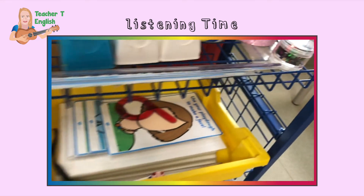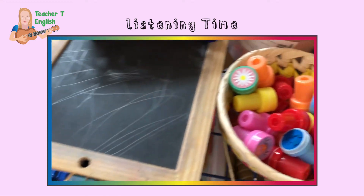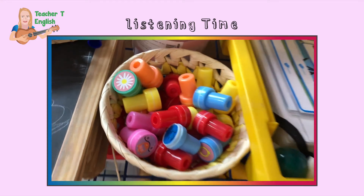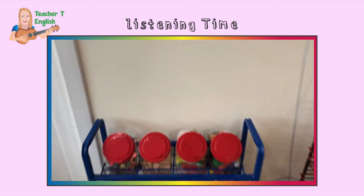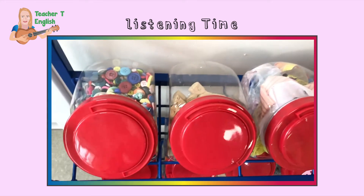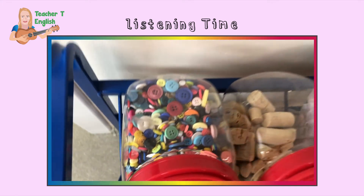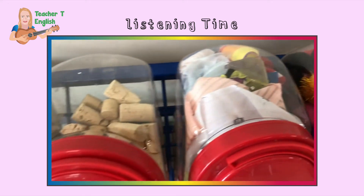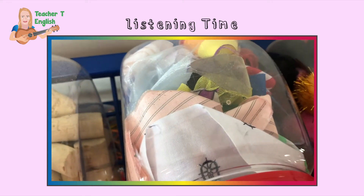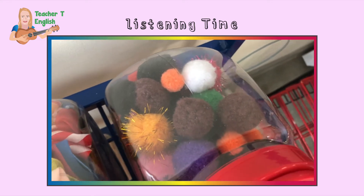Oh, look at these things! Chalkboard — stampers! So many special things in primary one. Let's go see over here — I love these boxes. What's inside? A box of buttons, a box of cork, a box of fabric, a box of pom-poms.